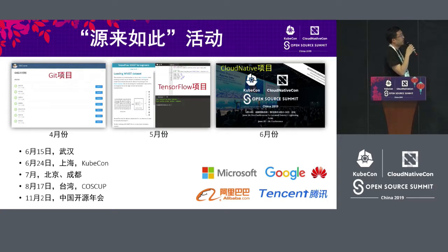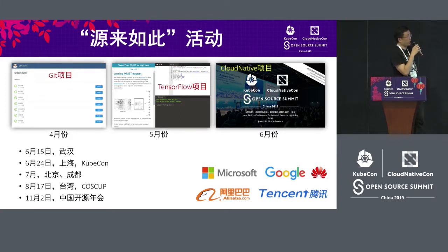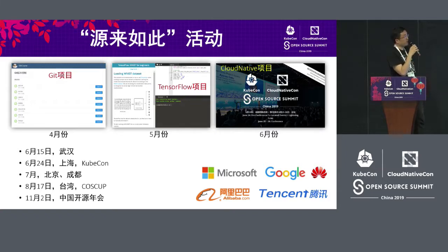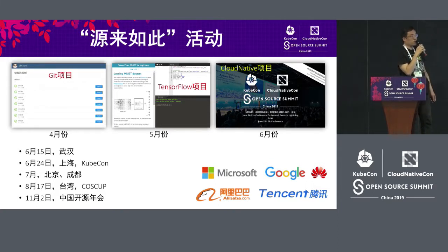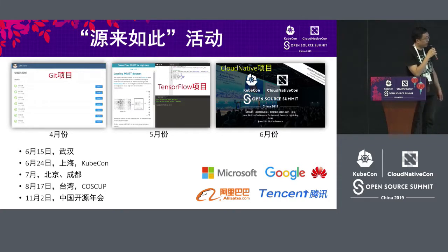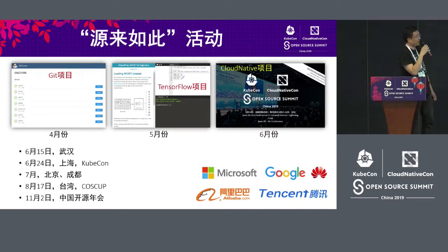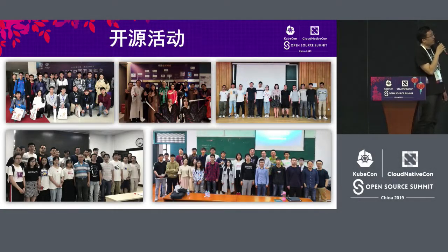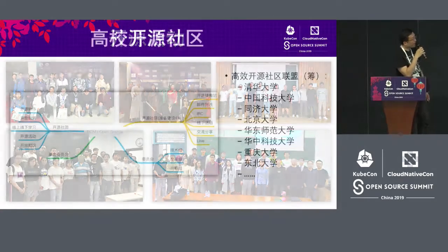With this infrastructure we can also organize activities in schools. In the first half of this year I was a member of our open source organization, and activities have already happened in a number of universities in Shanghai. For example, we give courses or lectures on Git, Go, or TensorFlow. We'll show some Kubernetes videos, and in July-August we will go to Beijing, Chengdu, and Taiwan respectively. In November we are going to have the China Open Source Annual Meeting, to promote open source courses in China and in the universities.